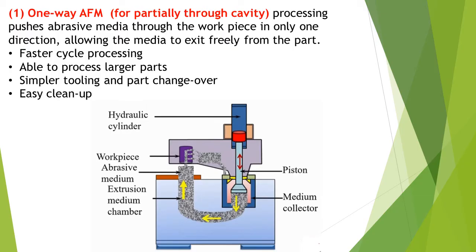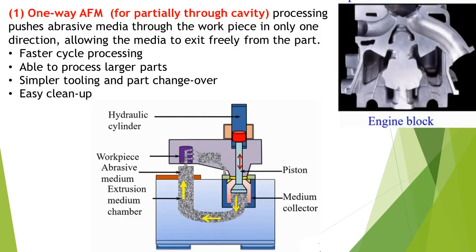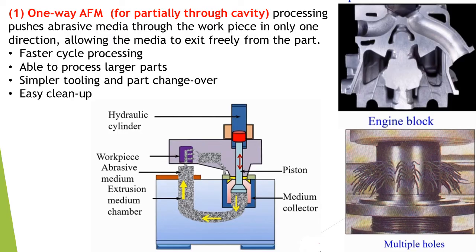One-way AFM is used for far-ceiling through cavity. It pushes abrasive media through the workpiece only in one direction, allowing the media to exit freely from the part. It has advantages of faster cycle processing, ability to process larger parts, simple tooling and part changeover, and easy cleanup. Examples of components machined by this method include engine blocks and parts with multiple holes.